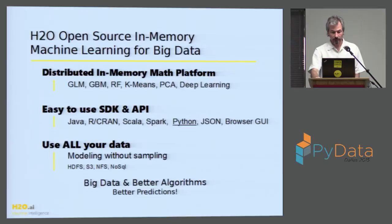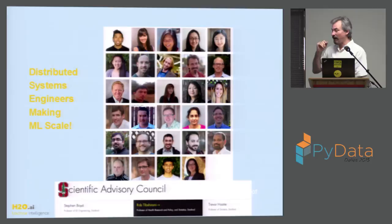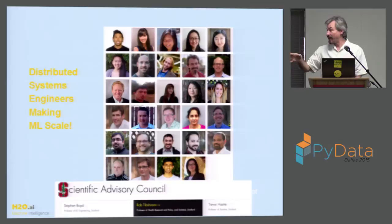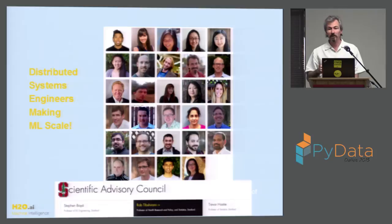A quick company slide. As usual with startups, the slide's already old with several faces missing. The key takeaway is our Scientific Advisory Council: Stephen Boyd, Rob Tibshirani, and Trevor Hastie — the modern three musketeers of the mathematical and stats community. These guys are inventing the newest and best machine learning algorithms out there, and they visit us regularly. Our algorithms really are the newest of the new and the best of the best.